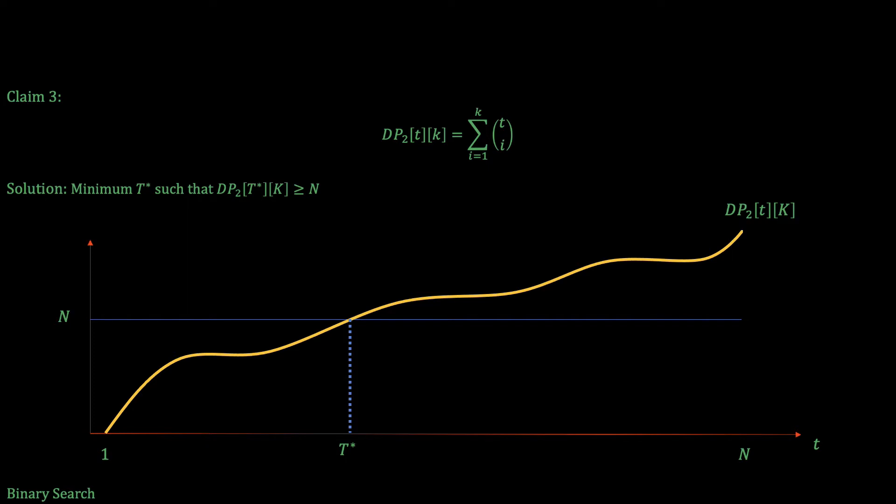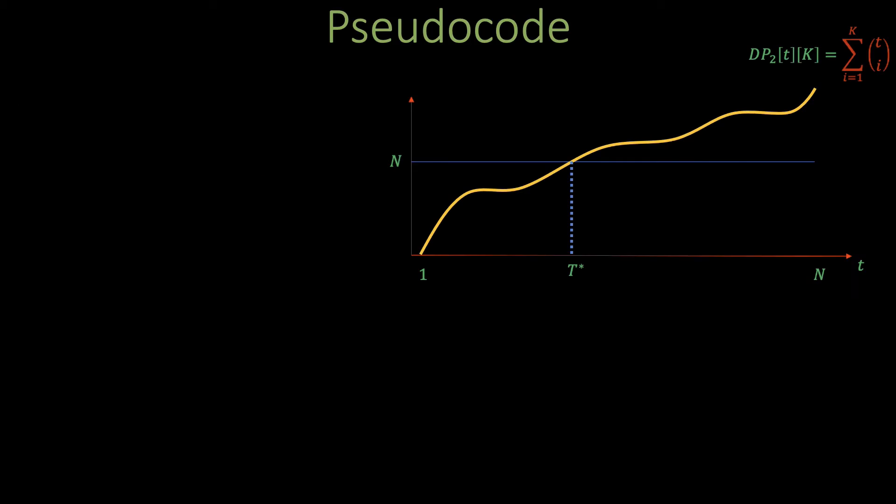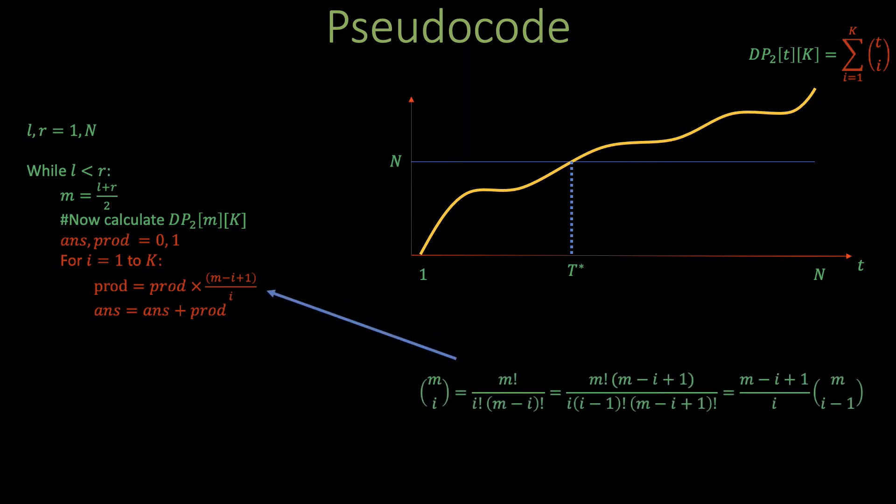So let's combine all of this into some pseudocode. First we know that T* is between 1 and N. So we let L be 1 and R be N. Then while L is less than R we calculate the middle index M. We will now calculate DP2[M][K]. This can be done in O(K) time using the code in red. The key idea here is to notice using some algebra that the term M choose i is equal to (M-i+1)/i times M choose i-1, the previous binomial term. This lets us calculate DP2[M][K] in just one loop by increasing i from 1 to K. We calculate the new binomial term prod using the previous binomial term and add it to ans the summation we want. Once we have calculated DP2[M][K] we check to see if its value is at least N. Then we know that T* is to the left of M. Otherwise T* must be to the right of M.